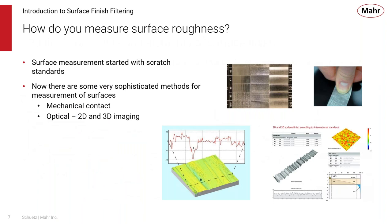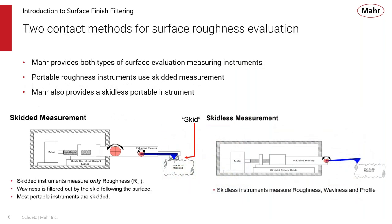How do people measure surfaces? It started with scratch standards — people used their thumb against a reference to estimate what the surface is. Now there are very sophisticated methods. Most are mechanical contact types, but today optical 2D and 3D imaging is becoming a very important way of monitoring surfaces. As tolerances get tighter and surfaces have more custom features required, optical might be the way to go in some applications, though the contact method is still the most common.